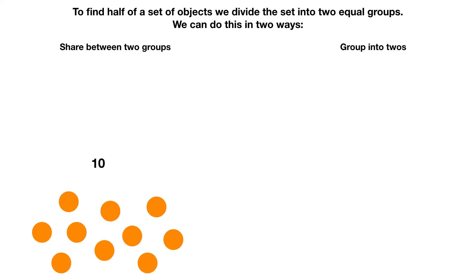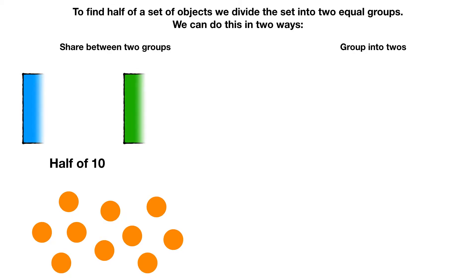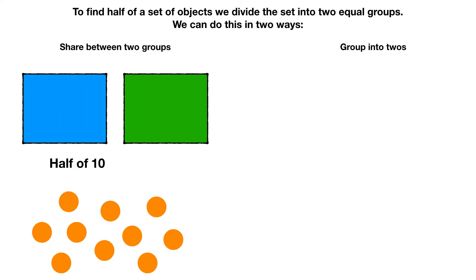We have ten circles. We want to find out how many circles would be half of ten. We move the circles one at a time into the blue and green boxes to share them equally between the two boxes, like this.